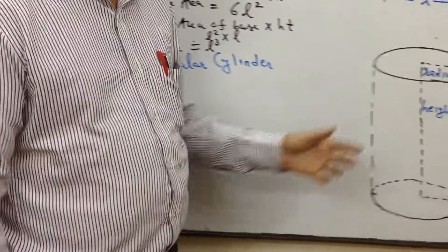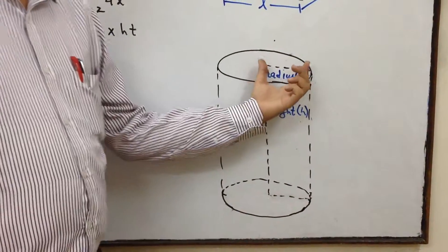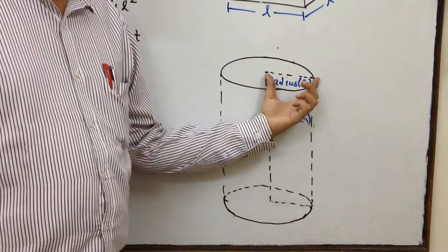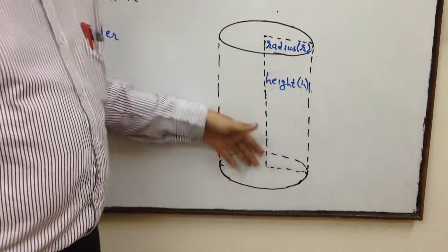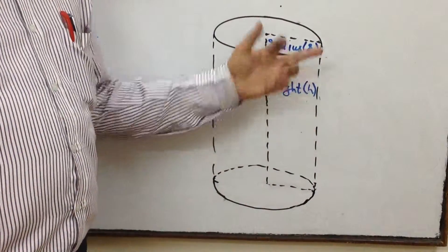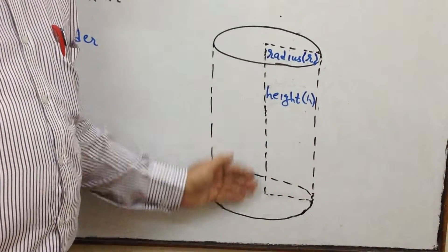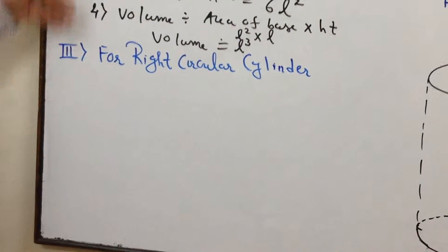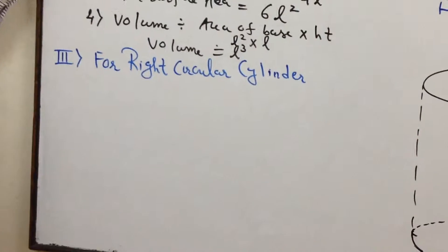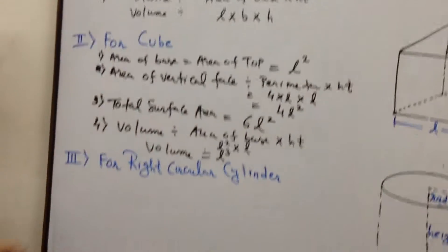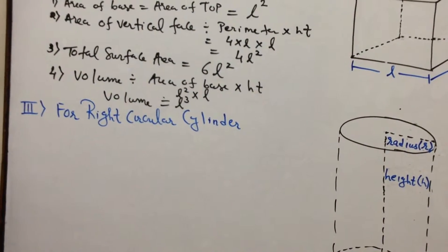What are the two parameters over here? The radius of the top as well as the radius of the base. And this is termed as perpendicular height, denoted by h. The radius is denoted by r, and perpendicular height is denoted by h. We shall study this on a parallel line to what we did for parallelepiped and cube.